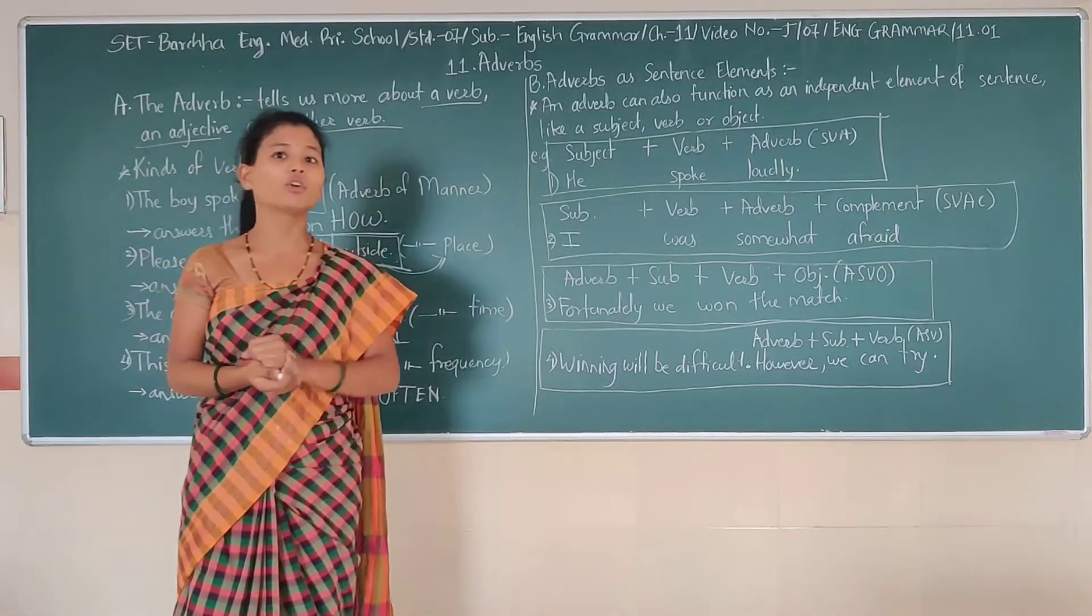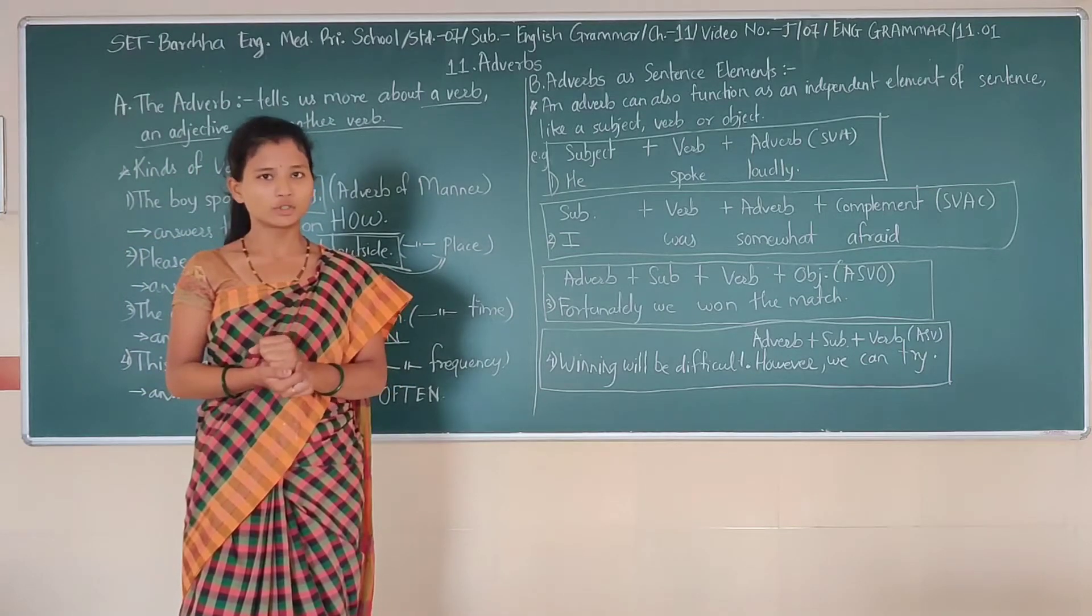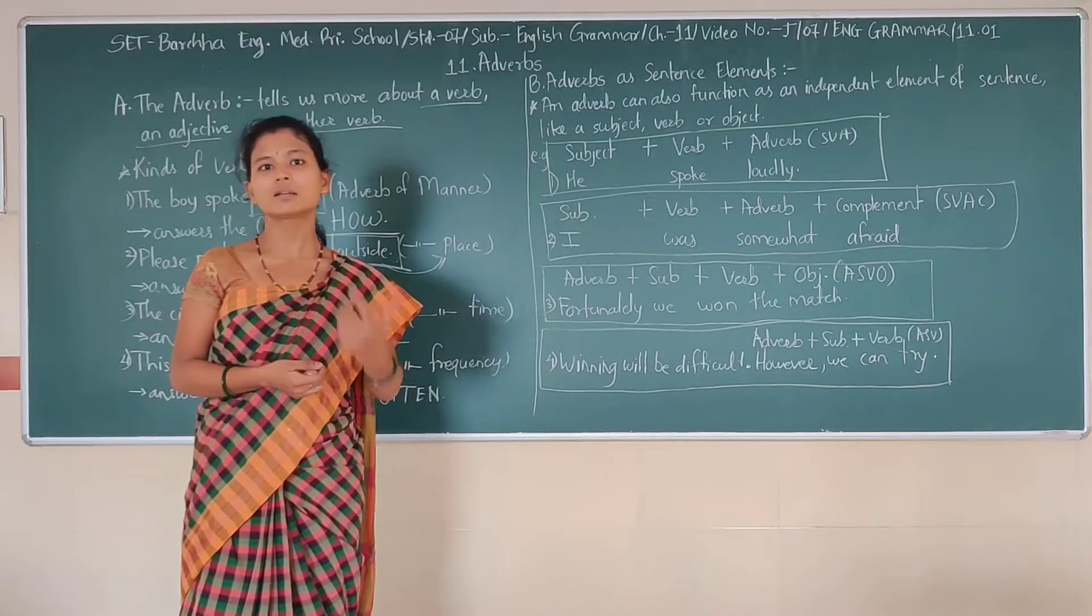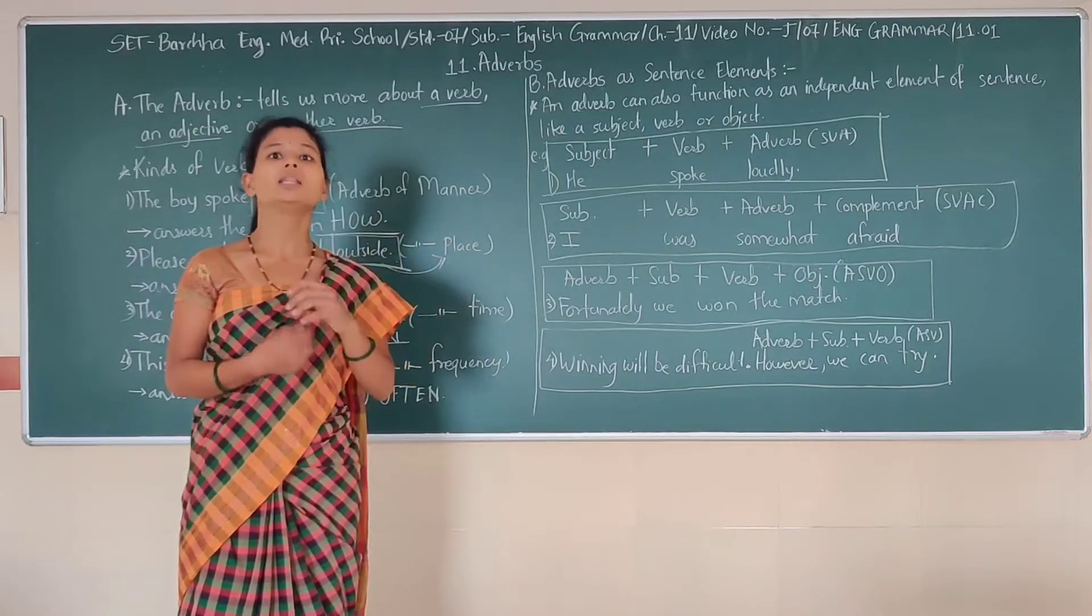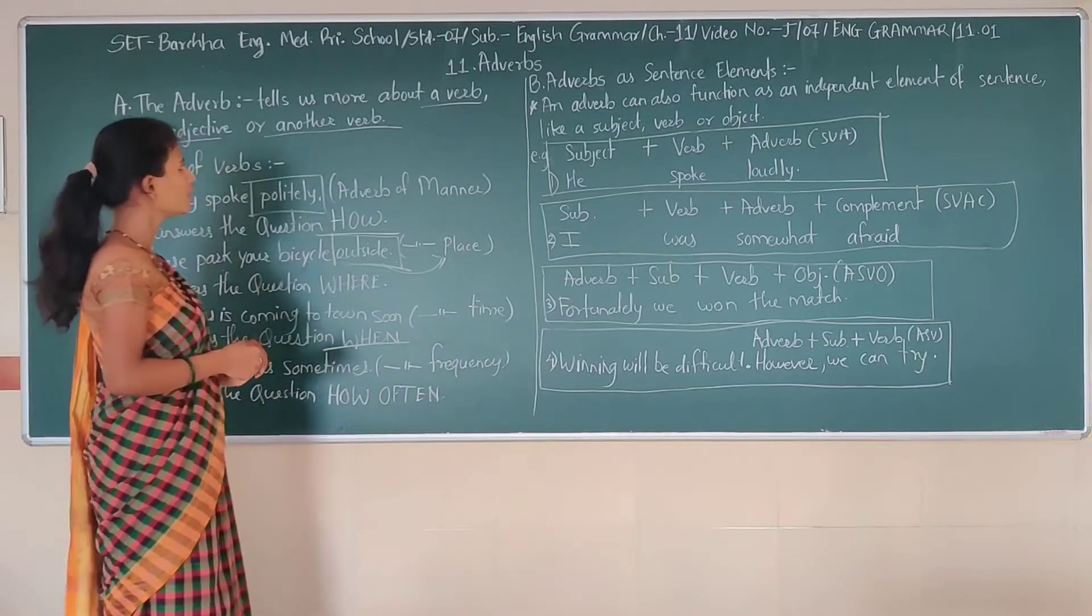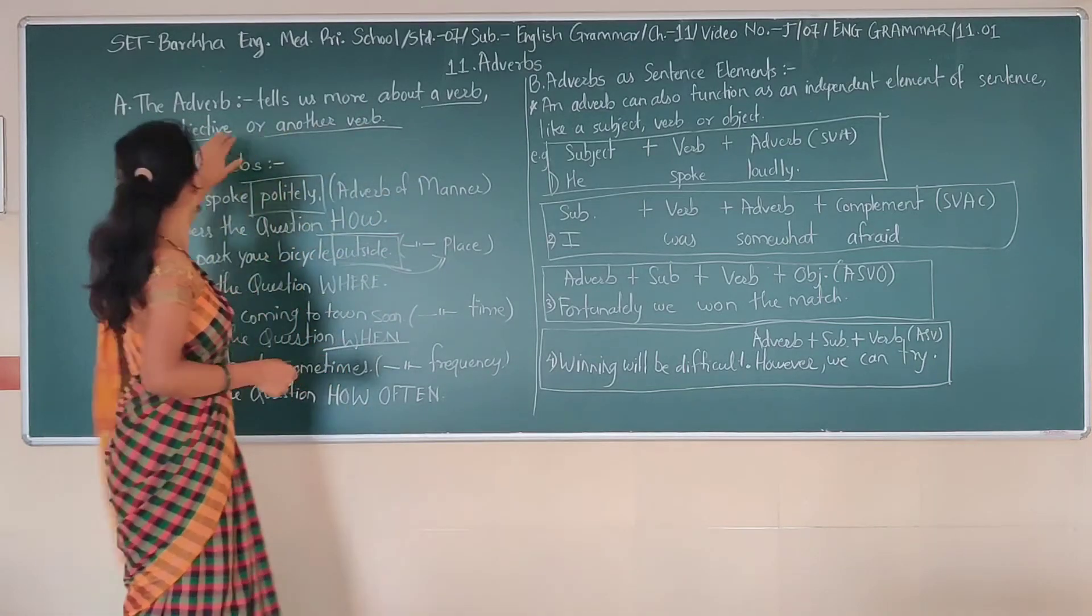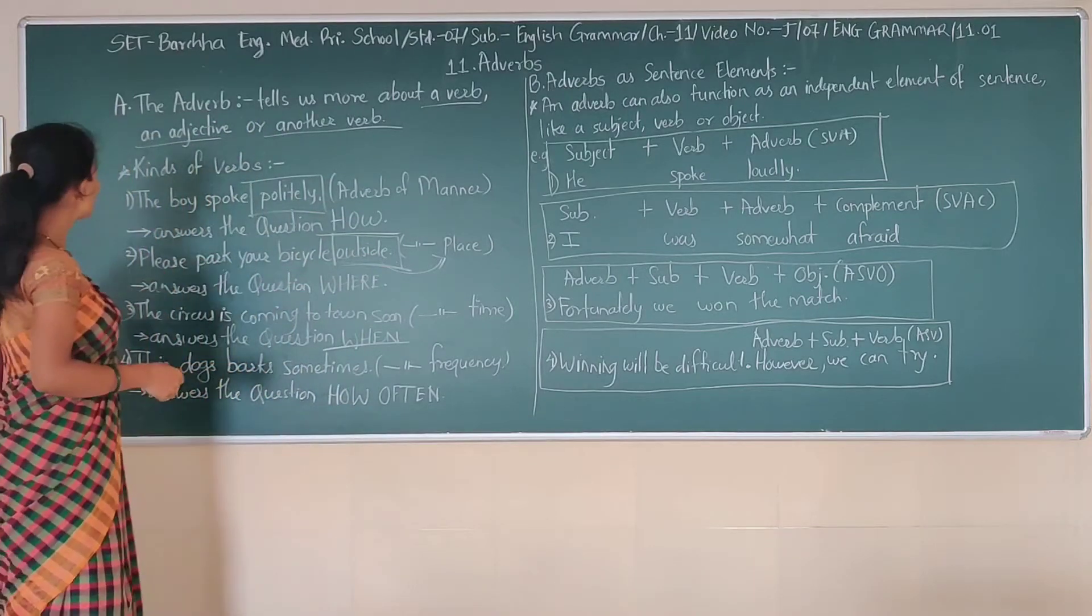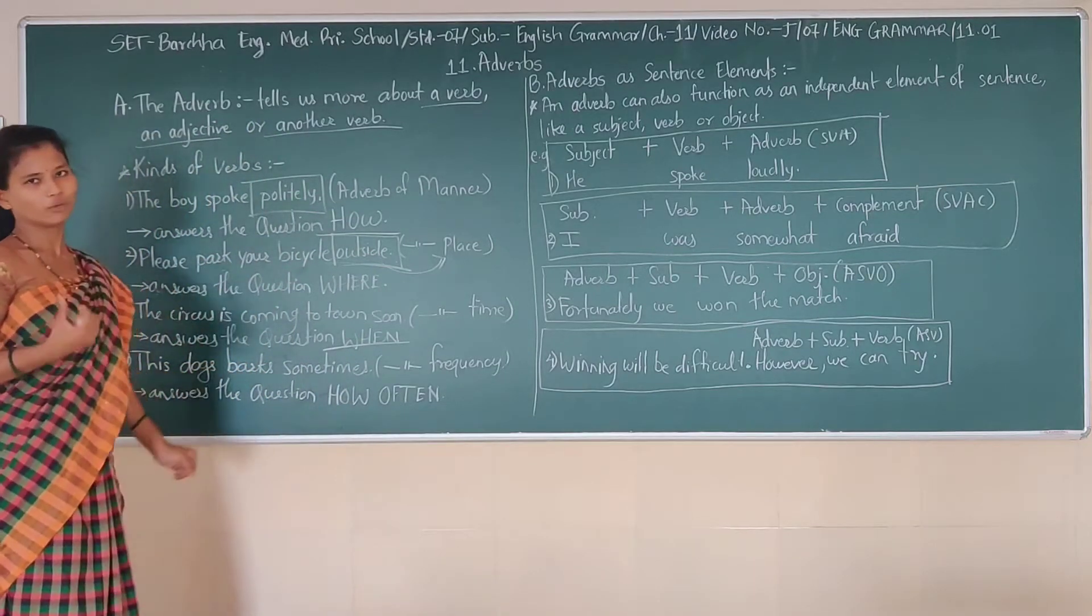Earlier we have done what is the adjective. Adjective is a word that tells us about a noun, and like that only, an adverb is defined by a verb, an adjective, or another adverb. Now there are four kinds of adverb.